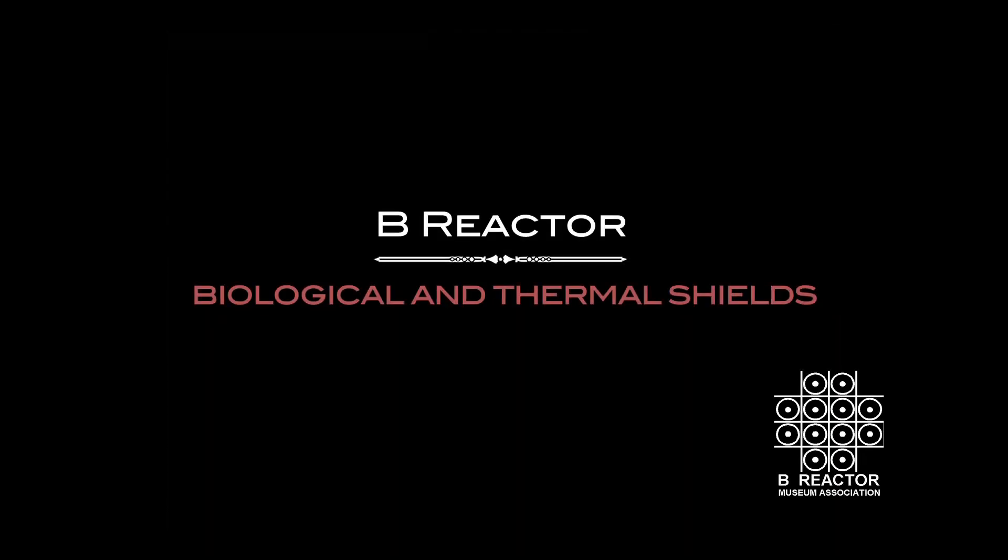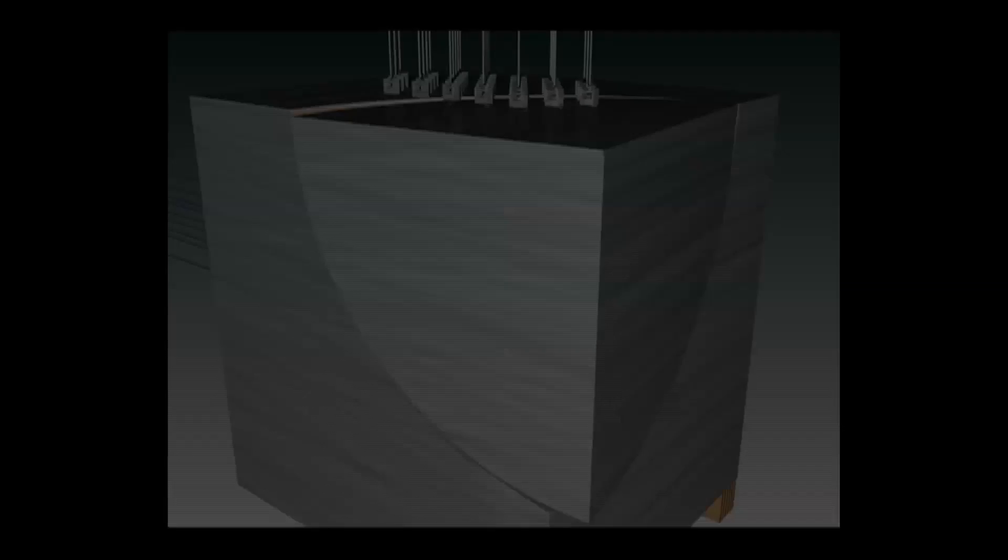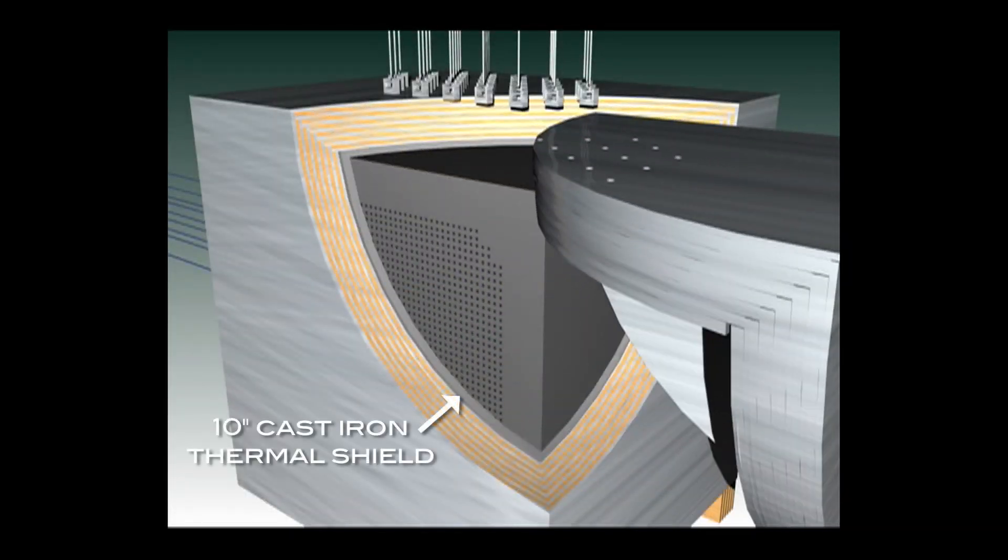Biological and Thermal Shields. A 10 inch cast iron thermal shield surrounds the graphite stack. The purpose of the thermal shield is to reduce the flow of gamma rays and to capture thermal neutrons